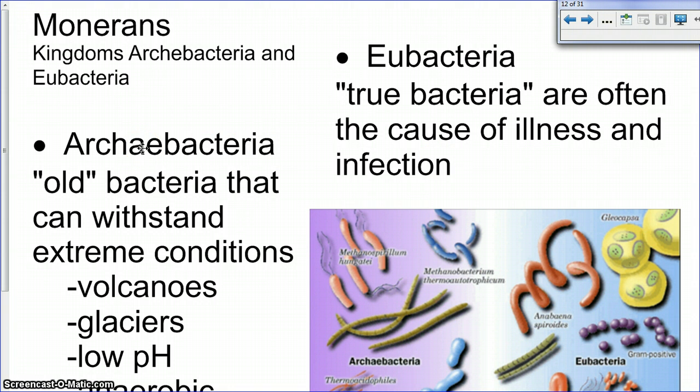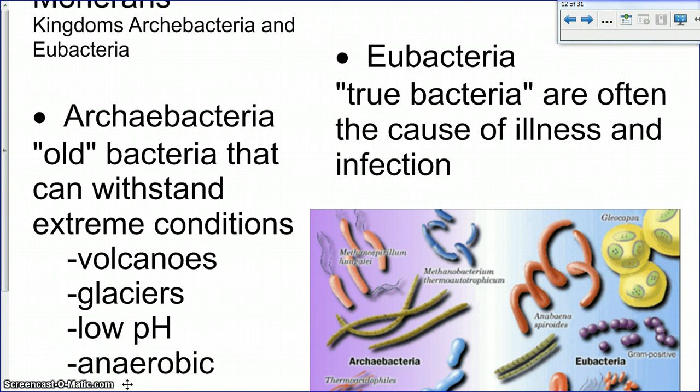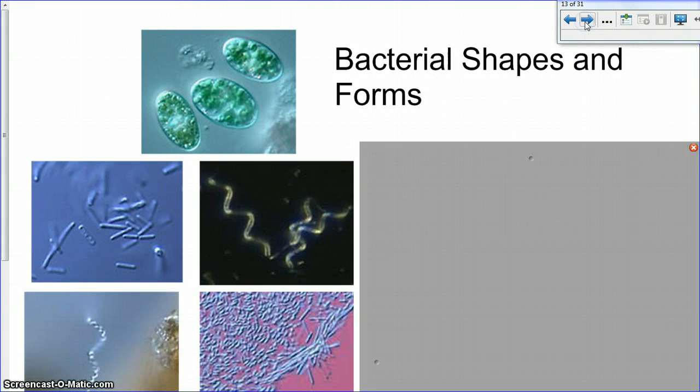Archaeobacteria are typically older bacteria that can withstand very extreme conditions. So, for example, like hot temperatures in volcanoes, cold temperatures in glaciers. They could have a low pH, so they exist in acidic environments. And the last one that's here is that they could live in an anaerobic environment. Anaerobic means that they live in an environment that has no oxygen. Usually, organisms use oxygen for cellular respiration, so that's why it's considered to be extreme.